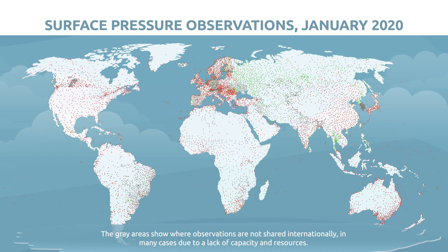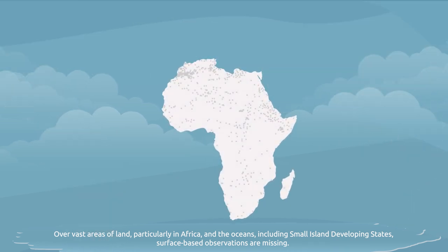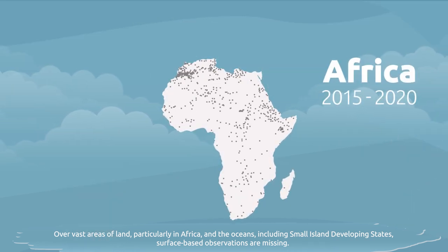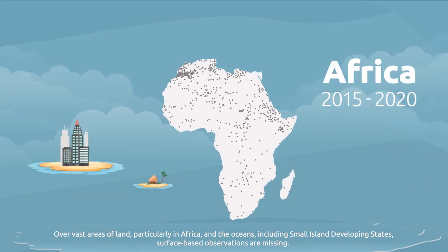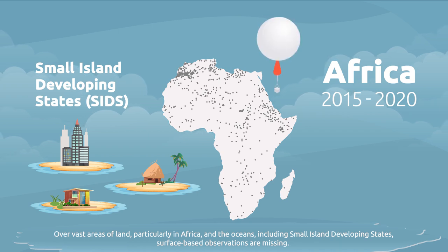The grey areas show where observations are not shared internationally, in many cases due to a lack of capacity and resources. Over vast areas of land, particularly in Africa and the oceans, including small island developing states, surface-based observations are missing.